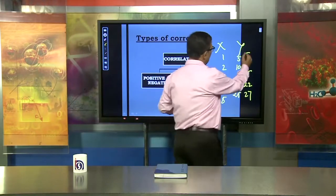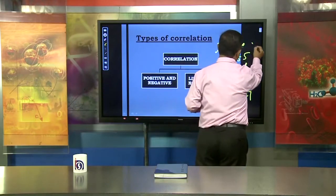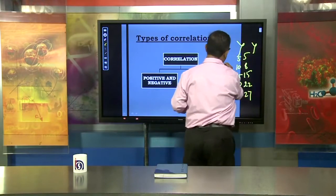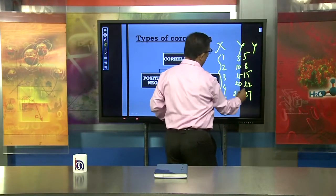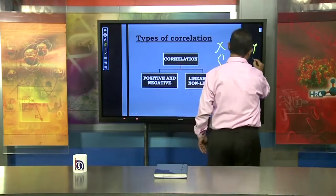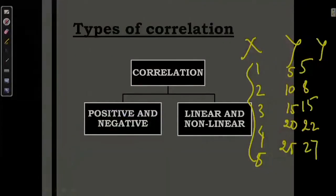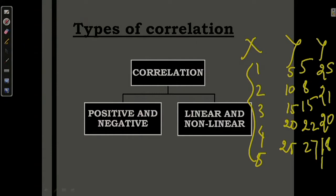For example, if we keep x the same but change y, what we see is: y values are 25, 21, 20, 18, and 12. Just make the comparative study between these two datasets — as x increases, y is decreasing, which illustrates negative correlation.